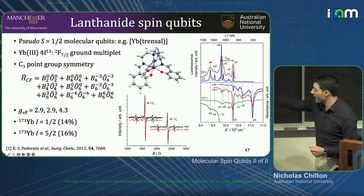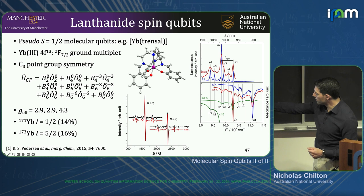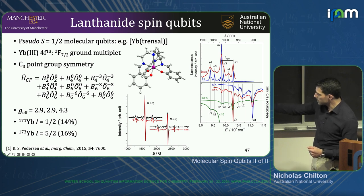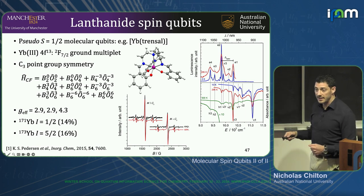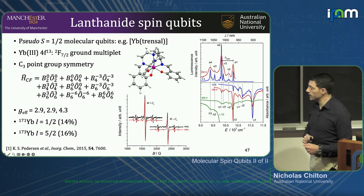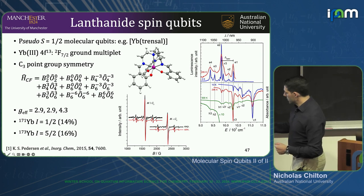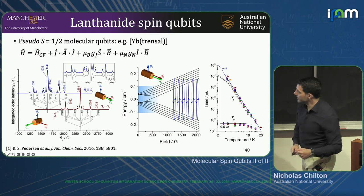The central line is the I=0 line, corresponding to about 70% of the sample with nuclear spin 0. The hyperfine-split ytterbium resonances appear as additional lines around the central line. So I think on the next slide I have a picture of all of that.